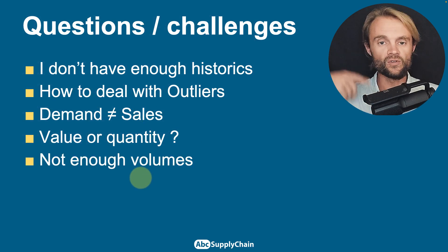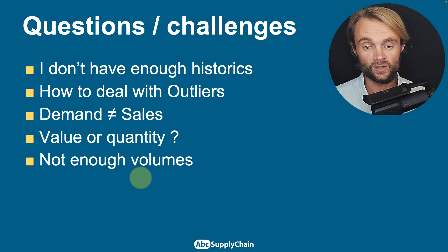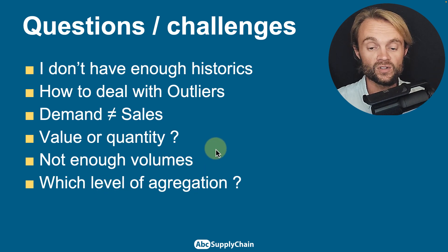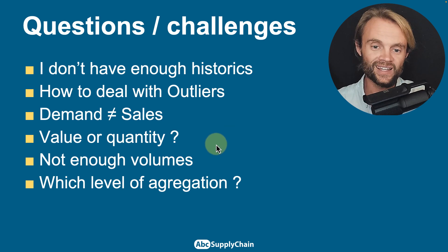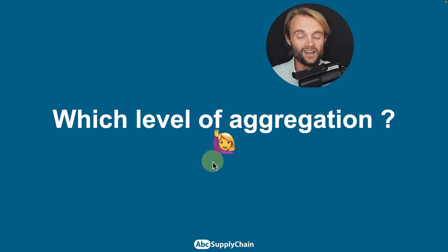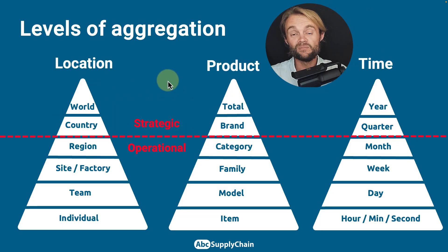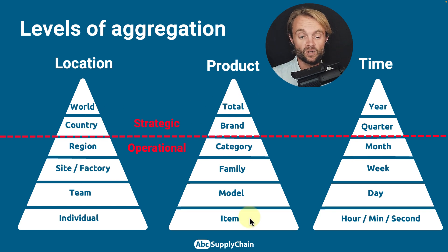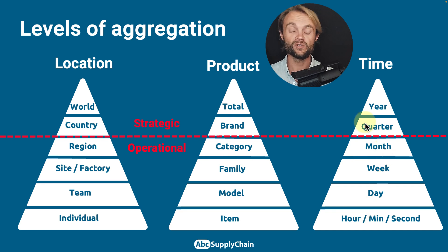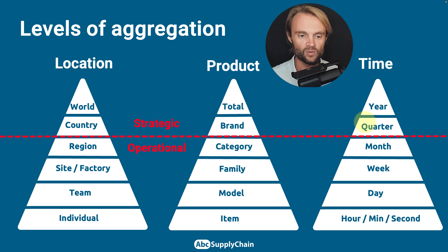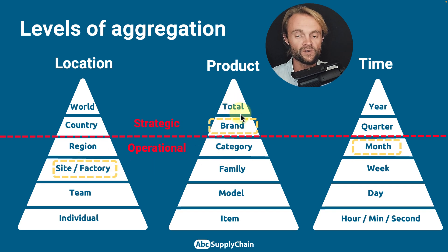What if you don't have enough volumes? Maybe there's no seasonality at all, or your product group is too small. The question of which level of aggregation is right is one I get a lot from students. You have three pillars: location — from individual to team member, factory, or region; product level — per item, model, family, category, brand, or total; and temporality — per day, week, month, quarter, or year. I recommend starting macro at the total or brand level with one site per month. The better you get at improving your forecast and seasonality patterns, the deeper you can go into lower granularity.